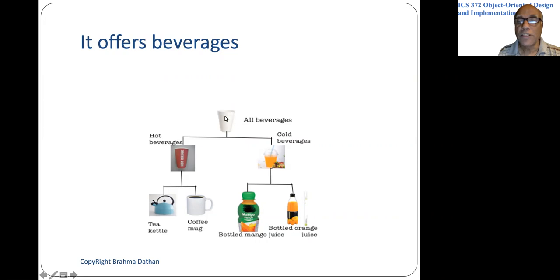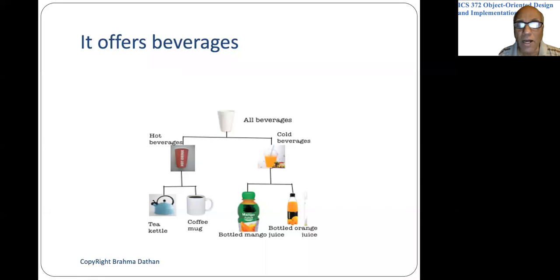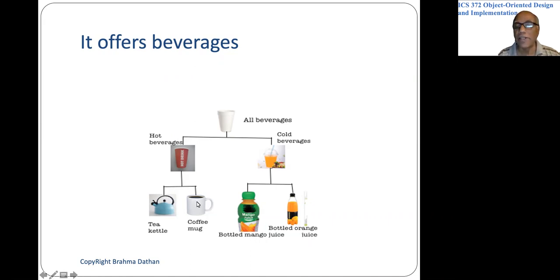Let's assume that this styrofoam cup can hold hot as well as cold beverages. This kind of cup can only hold hot drinks, and this container can only store cold beverages. Let's pretend that tea is stored in kettles. In this white mug, you only have coffee. So if you are told this white mug contains a liquid, you know it is coffee. And mango juice comes in bottles, while orange juice comes in a different type of bottle.